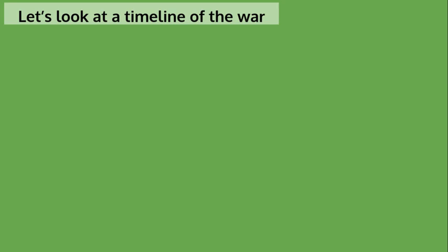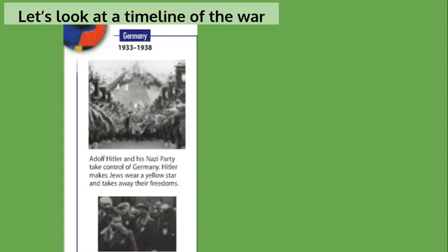We're going to take a look at a timeline of World War II so you can better understand what's happening and when this all happened in history. Between 1933 and 1938, Hitler took away freedoms from the Jews and others in Germany.